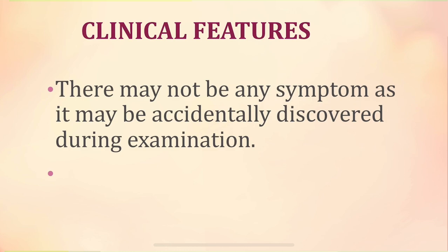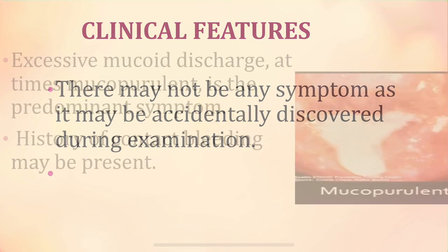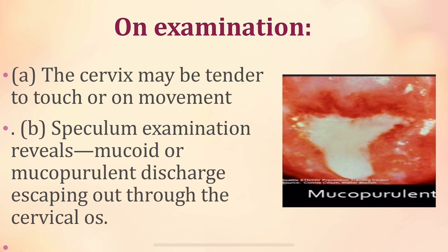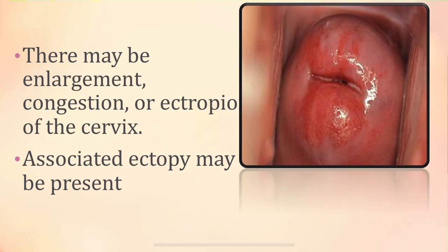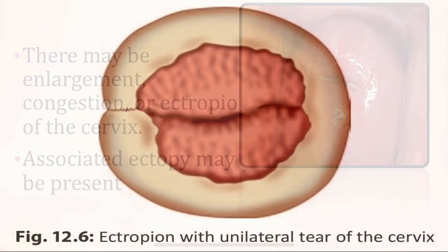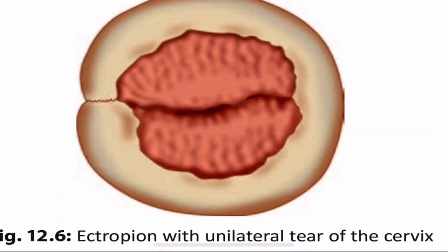Chronic cervicitis may have no symptoms and be discovered incidentally during gynecological examination. The predominant symptom is excessive mucoid or mucopurulent discharge, and contact bleeding can also occur. On examination, the cervix is tender to touch and movement; speculum examination reveals mucopurulent discharge escaping through the external cervical os, with enlargement, congestion, ectropion, and associated ectopy.